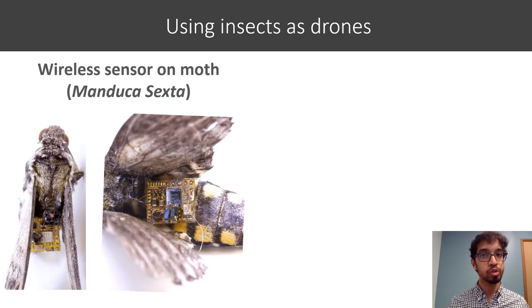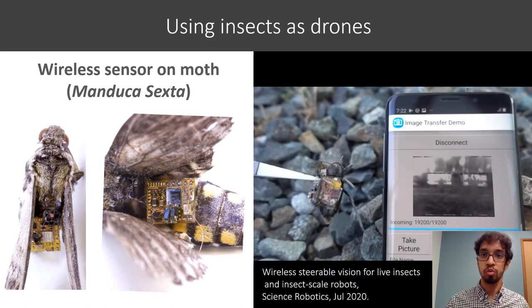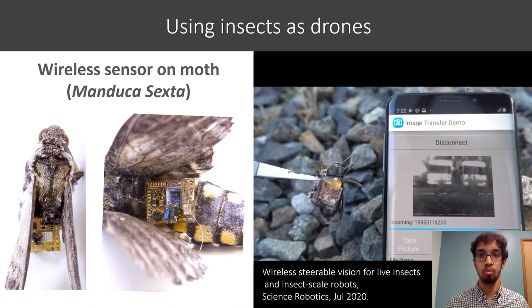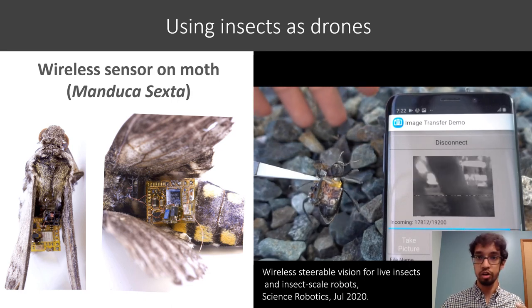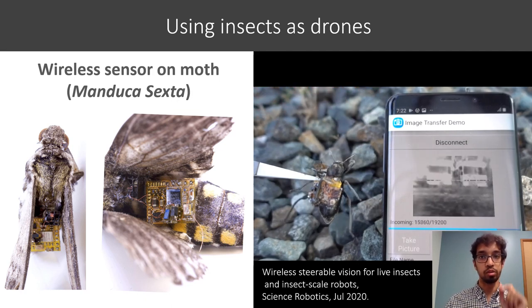Looking forward, we also explored the idea of using live insects to carry sensors as they can fly around for hours, unlike drones which require recharging. For example, here's a moth carrying our sensor. We're also looking into leveraging our prior work on insect scale vision to integrate that camera and release a sensor in exactly the right spot.